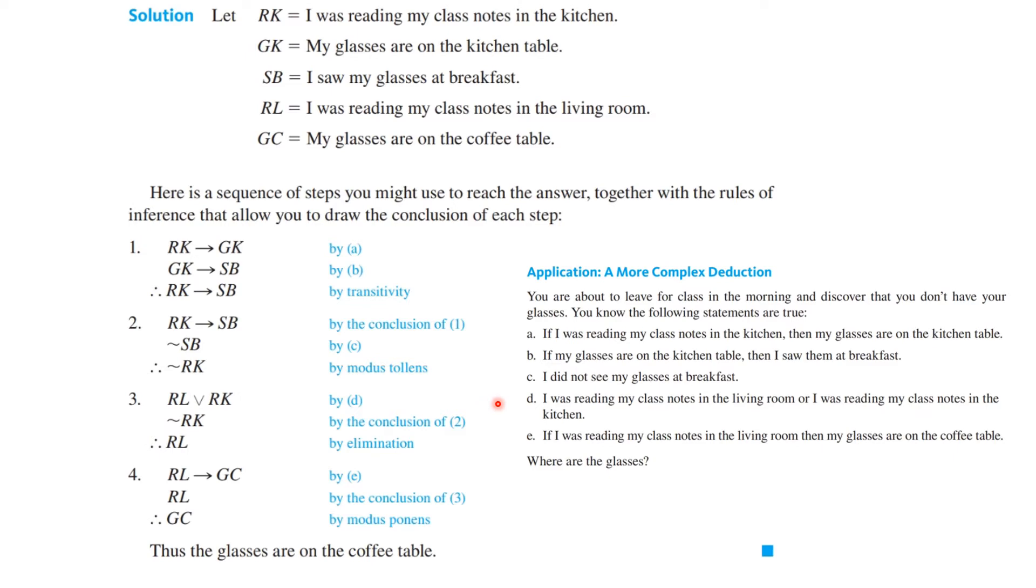Okay, then D, either you were reading your class notes in the living room or class notes in the kitchen. So it's RL or RK. But we know it's not RK by the conclusion of 2 up here. So that means that it is RL. And that's the elimination rule, or the one thing that we just talked about actually.